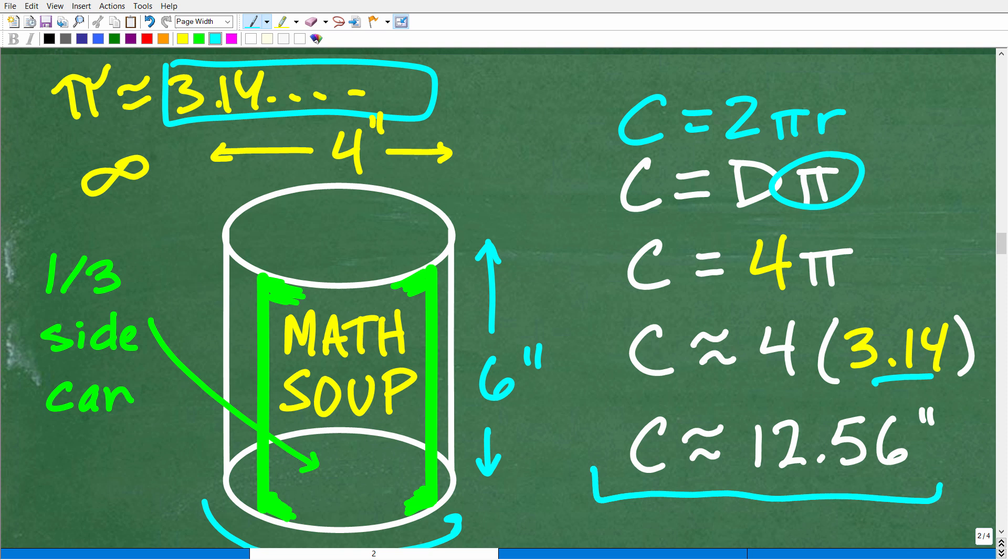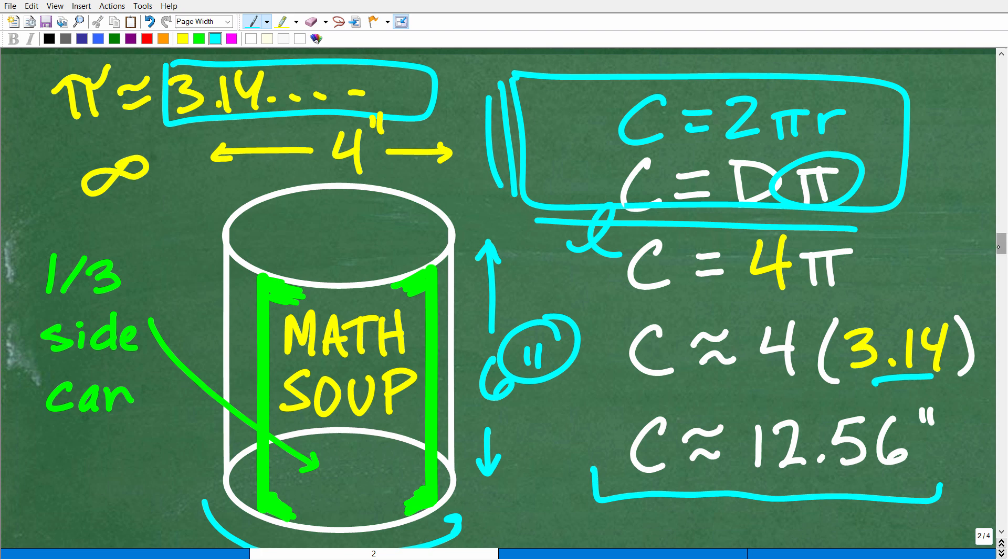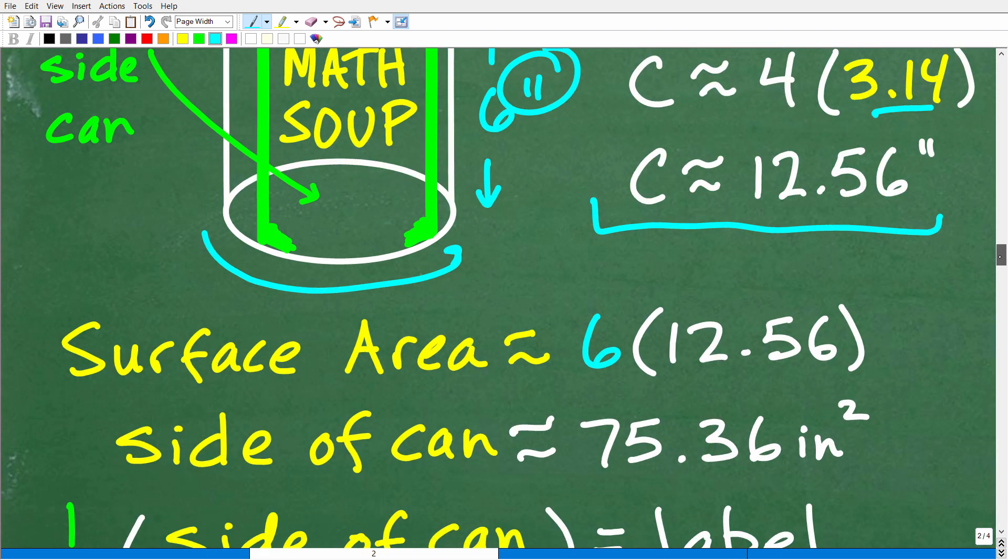Now, or effectively what we just found was the length here of this rectangle, this piece of paper that we could wrap around the entire can. Okay. So that's approximately 12.56 inches. So we are working with the units of measure of inches. So now let's go ahead and multiply that by the width. In this case, that is six.